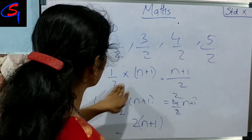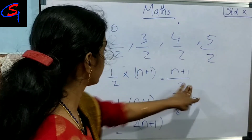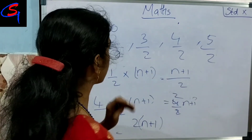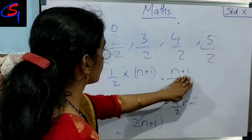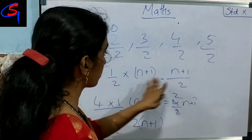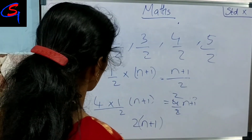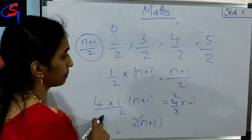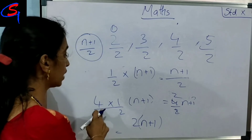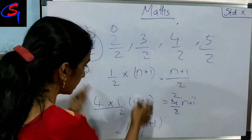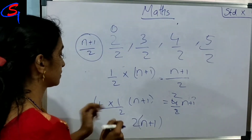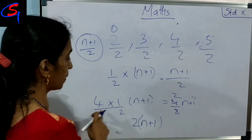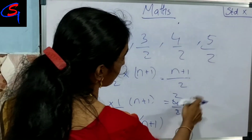This means we want to get this method. Then we choose this form: 4 boxes, putting in this box which is N plus 1, then we put 4 by 2 into N plus 1.